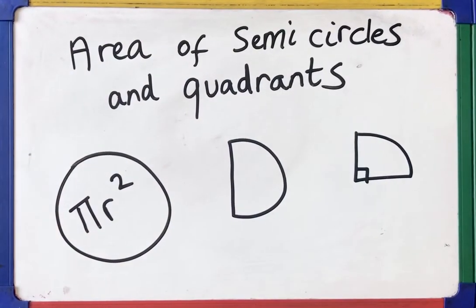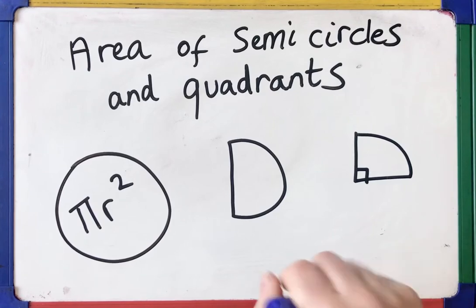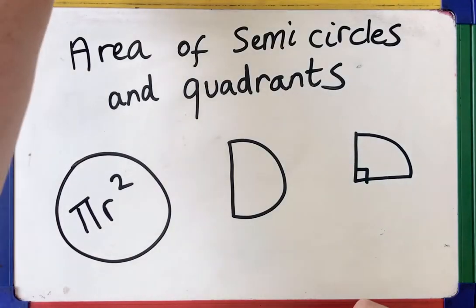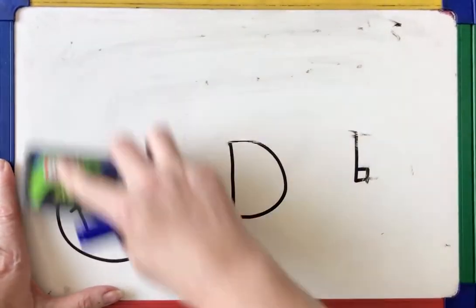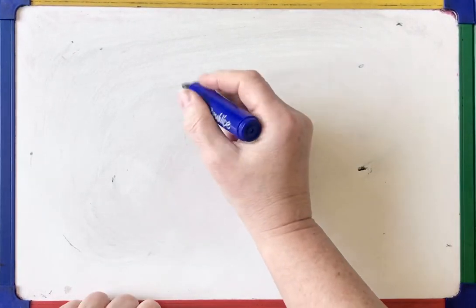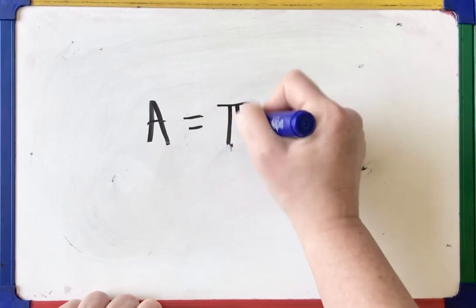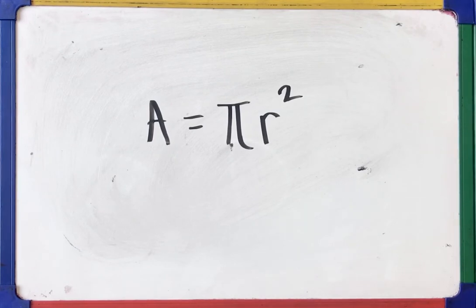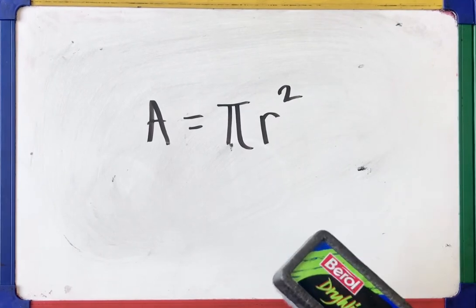This video will show you how to find the area of semicircles and quadrants. A semicircle is half a circle; a quadrant is a quarter of a circle. Only watch this video if you already know how to find the area of a full circle — otherwise go back and watch that video first. The formula for the area of a circle is pi r squared.